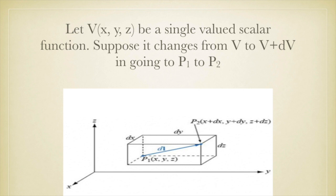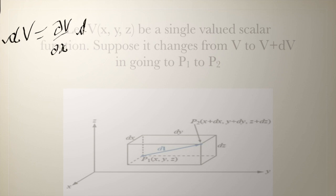If V is a single valued scalar function, then we can find the change from V to V plus dV when going from point P1 to P2 by using partial derivative theorem. That is dV equals partial V upon partial x into dx, plus partial V upon partial y into dy, plus partial V upon partial z into dz.